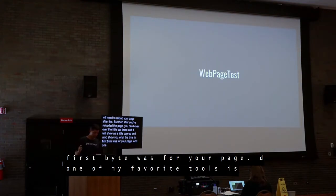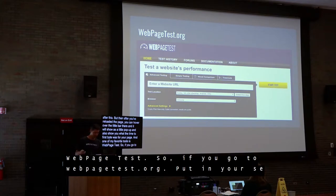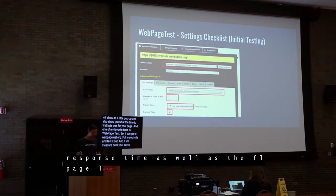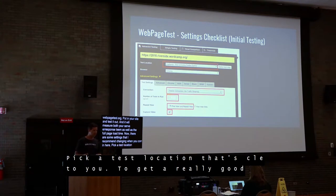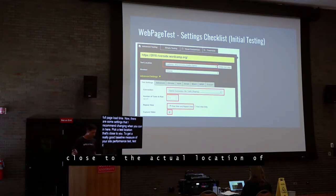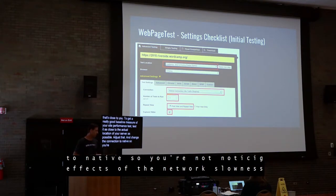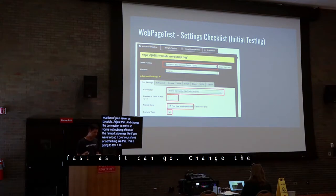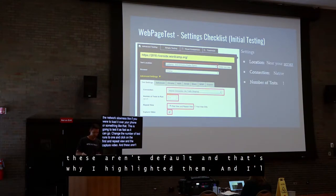One of my favorite tools is WebPageTest. Go to WebPageTest.org, put in your site, and test it. It'll measure both your server response time and the full page load time. I recommend changing a few settings: pick a test location close to you and close to your actual server, change the connection to native so you're not simulating network slowness, change the number of test runs to one, check first repeat view, and capture video — these aren't default, which is why I highlight them.